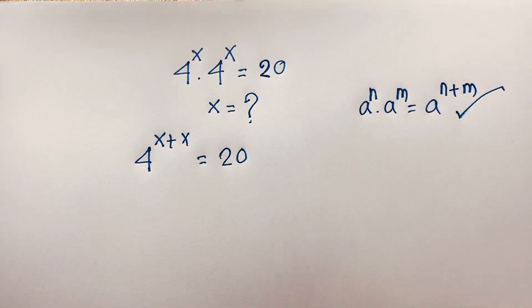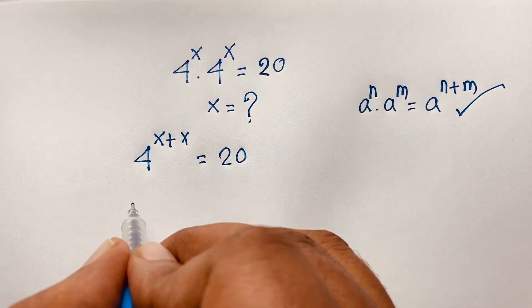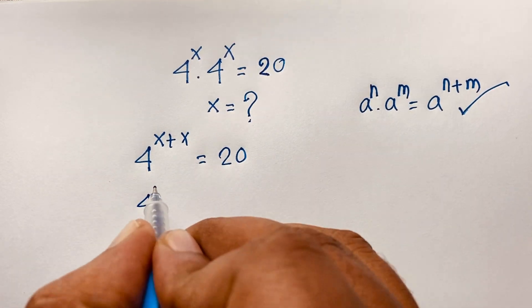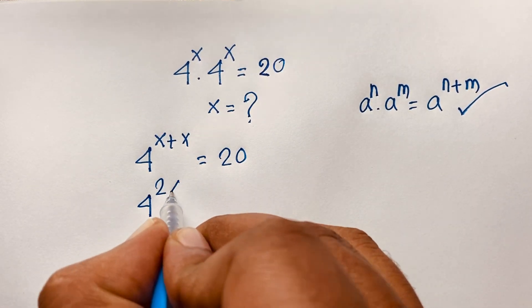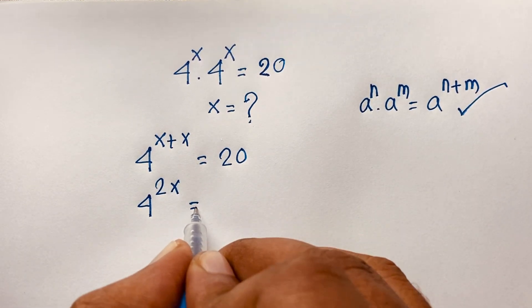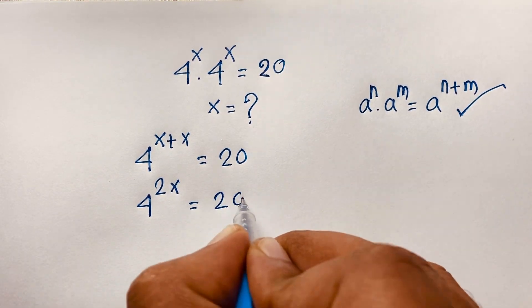Now, at this moment, we have 4 to the power x plus x, which gives us 4 to the power 2x is equal to 20.